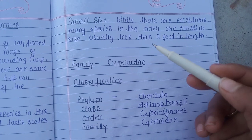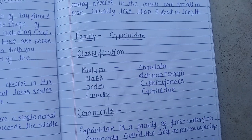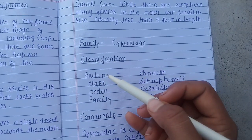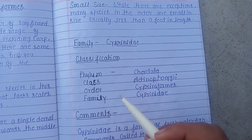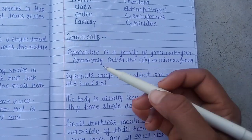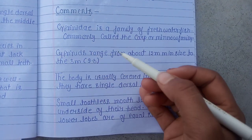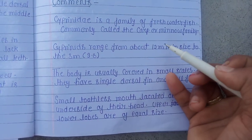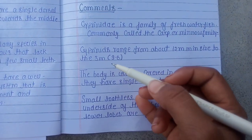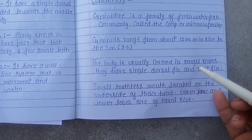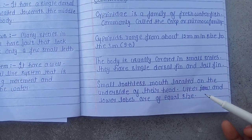Many species in this order are small in size, usually less than a foot in length. Here is an example of the family Cyprinidae: classification includes phylum, class, order, and family. It is a family of freshwater fish commonly called the carp or minnow family. The body is usually covered in small scales, with a single dorsal fin and a small toothless mouth.